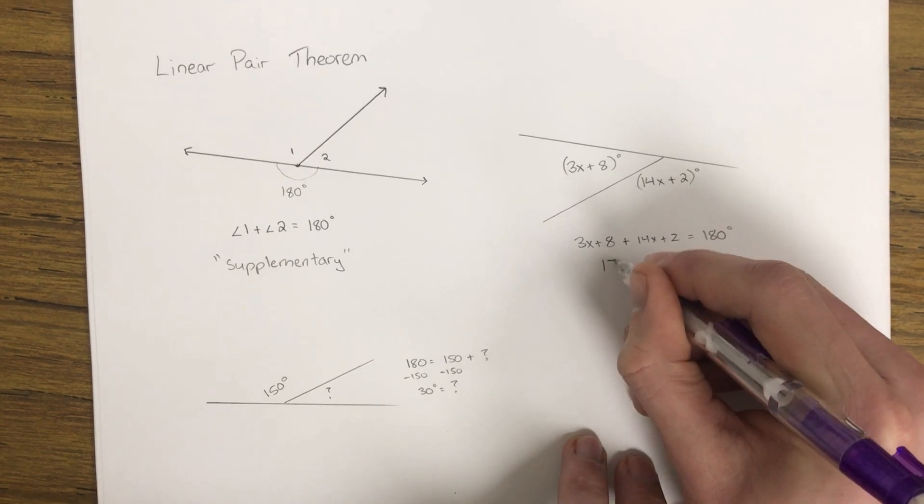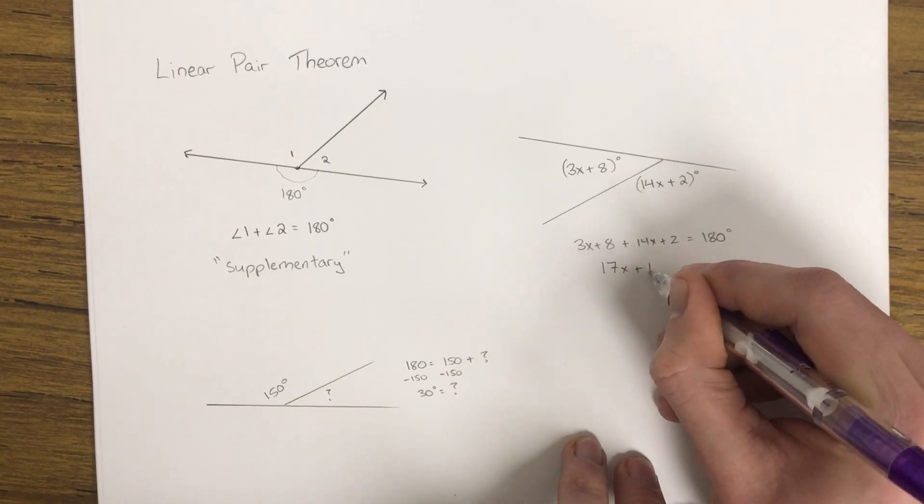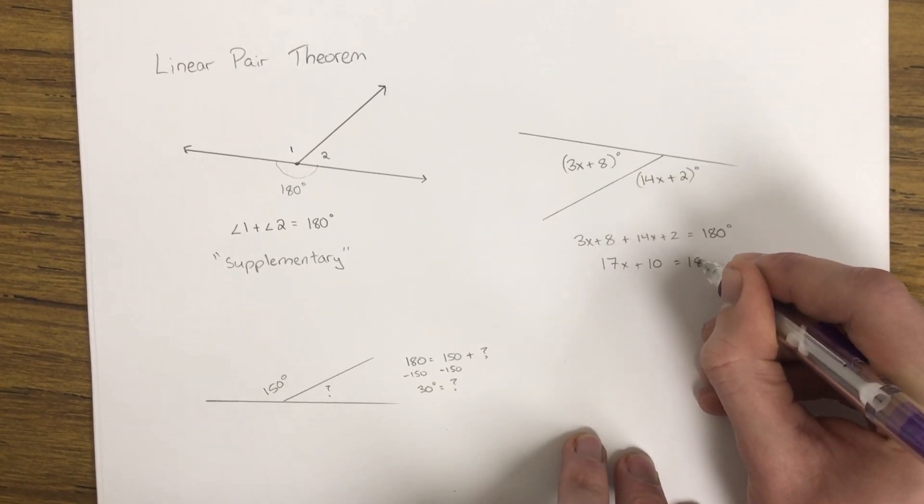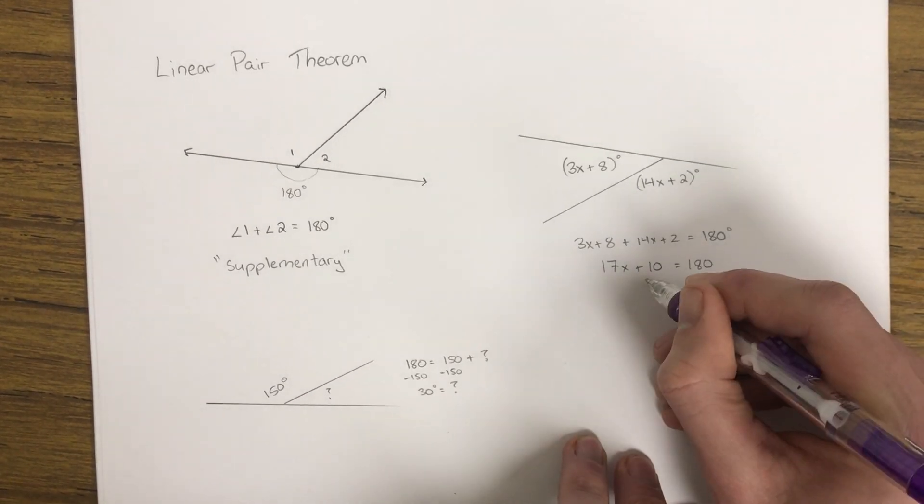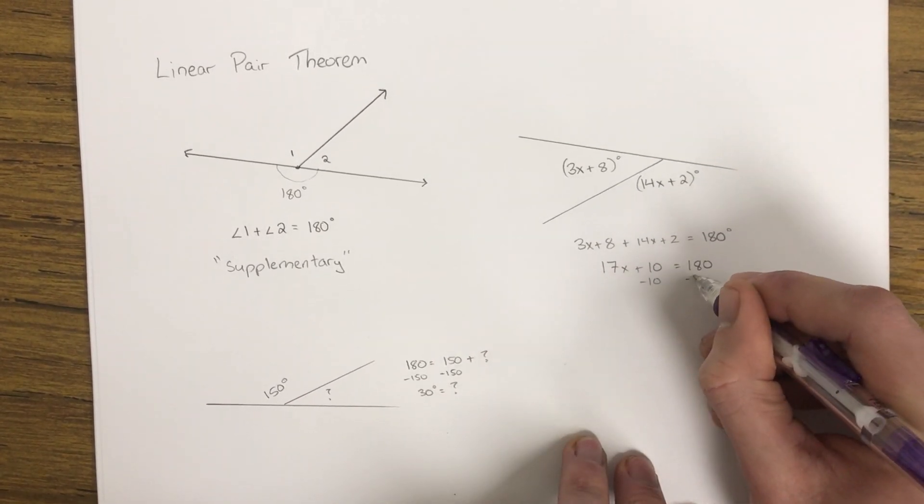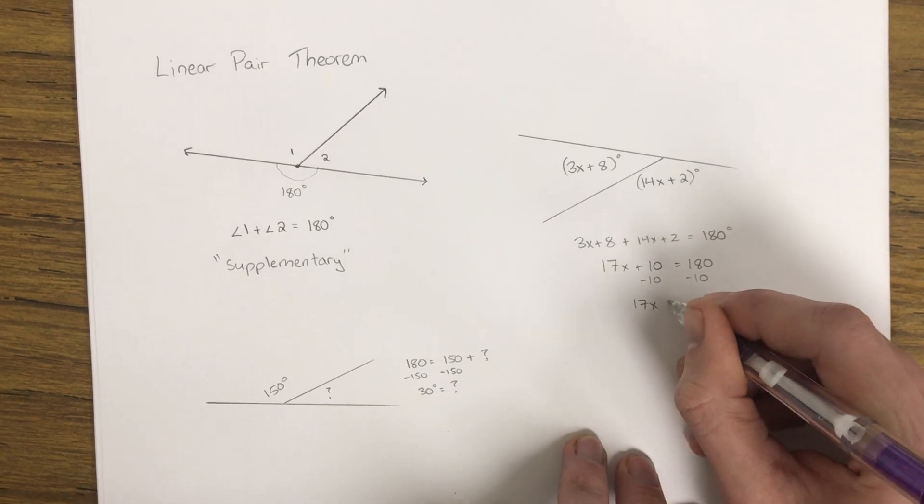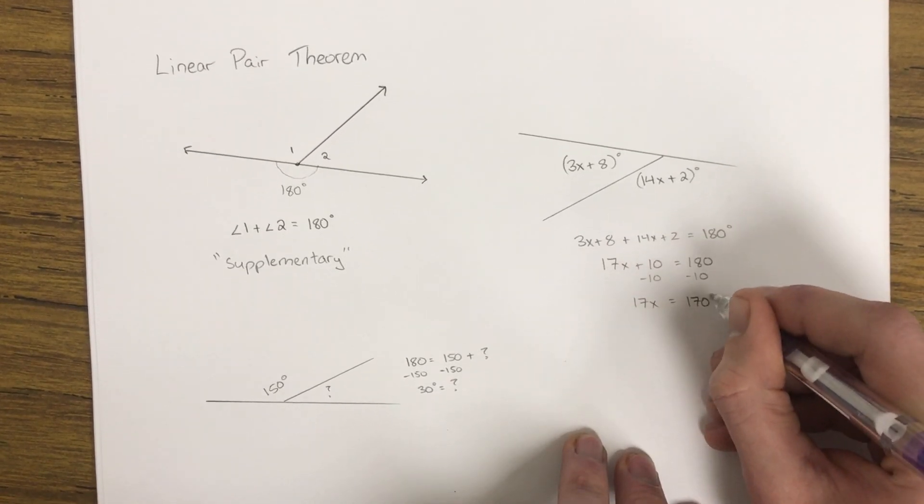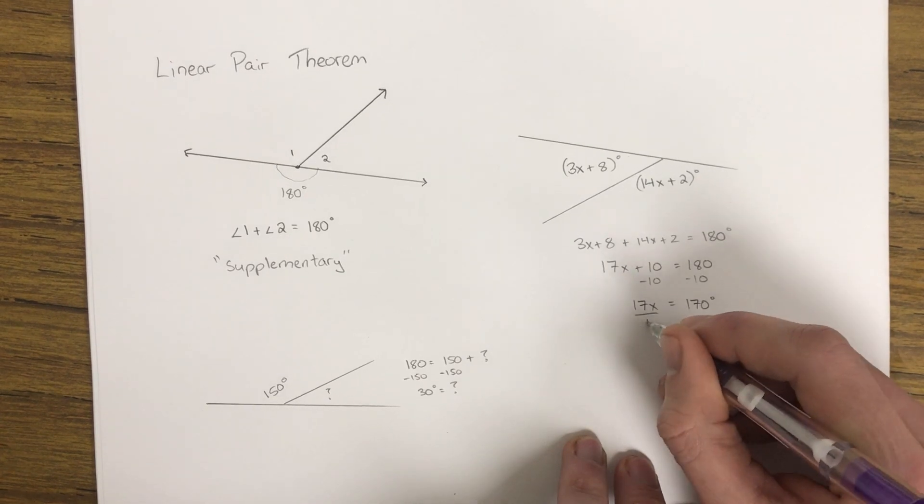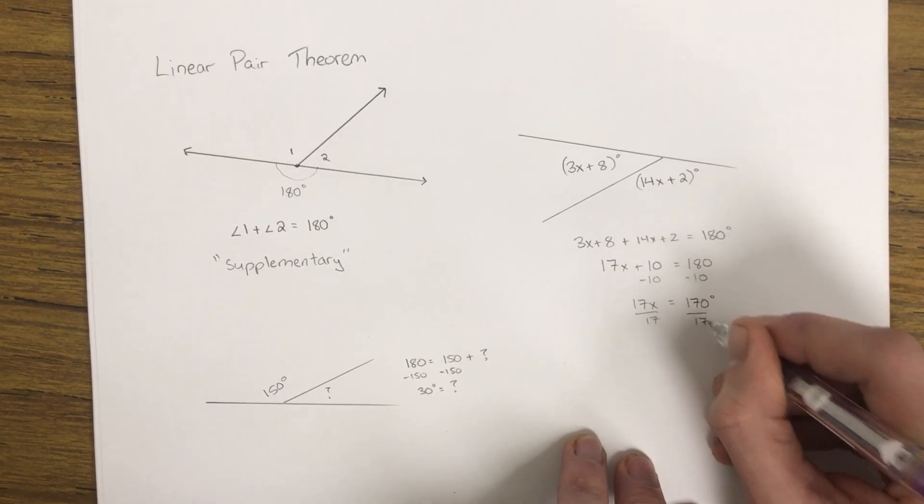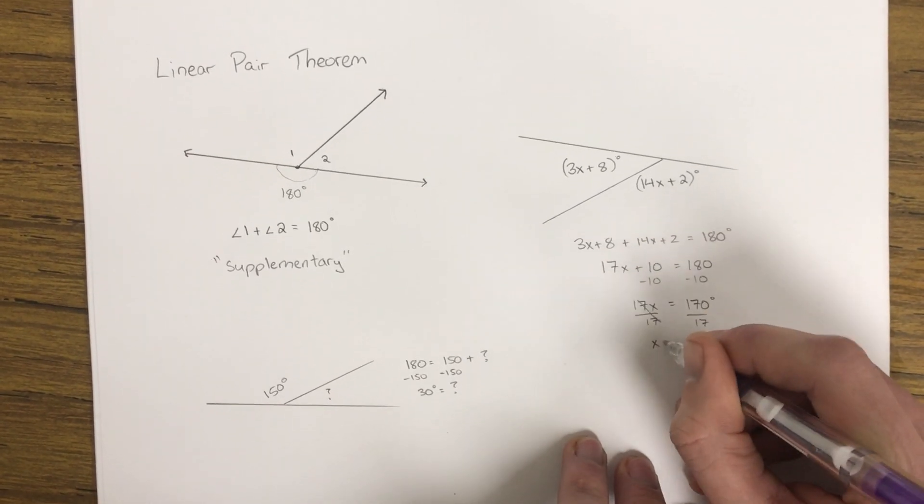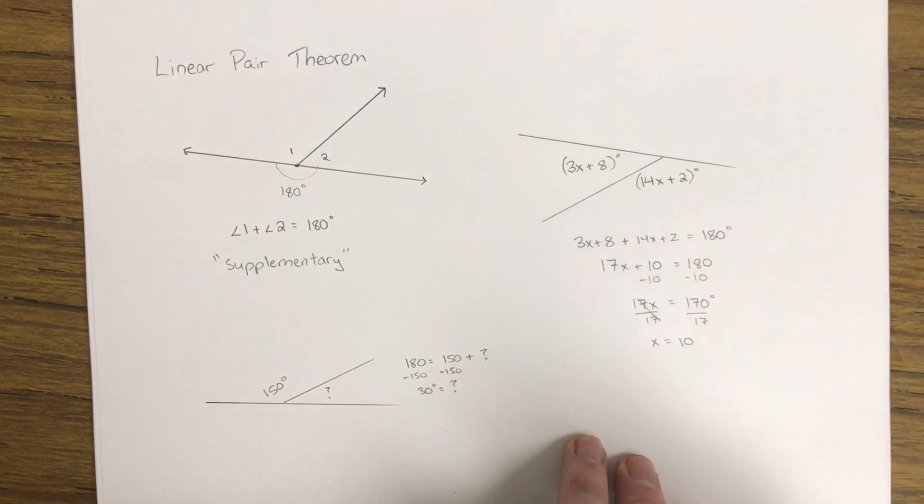Combine like terms, 17x plus 10 equals 180. Start trying to solve for x. So subtract 10 from both sides. 17x is equal to 10.